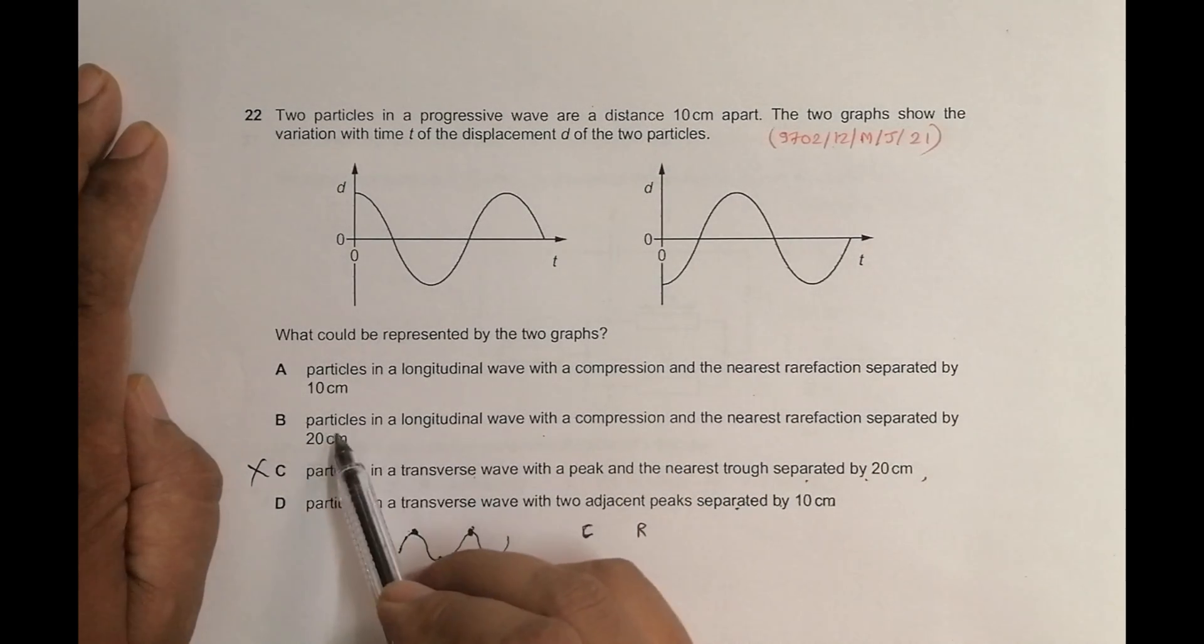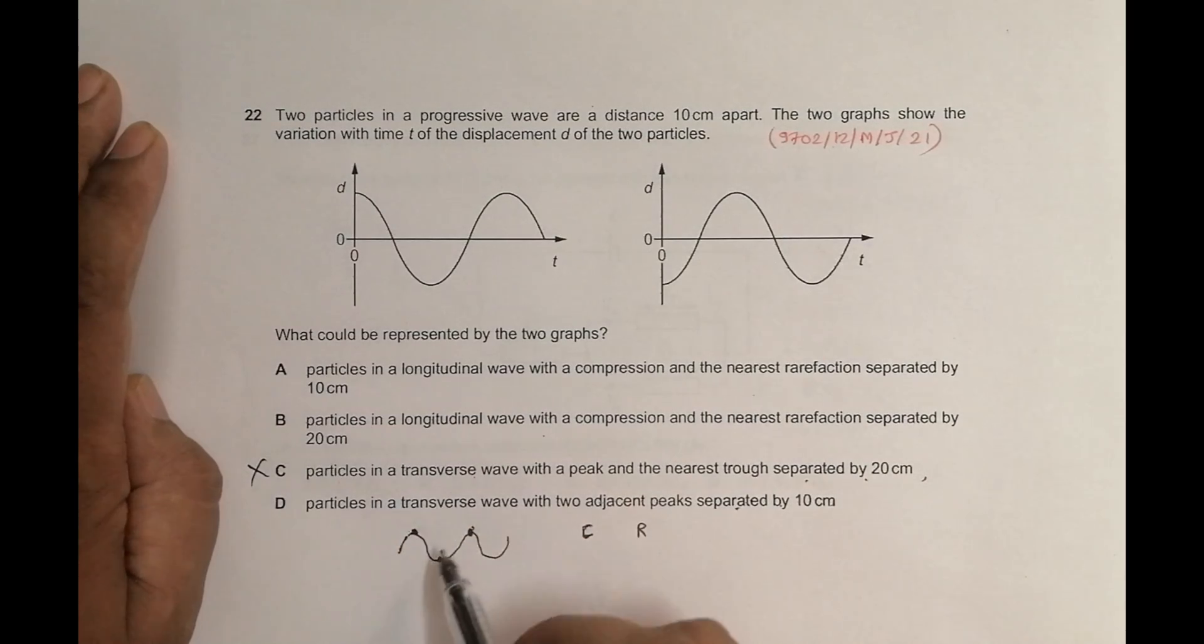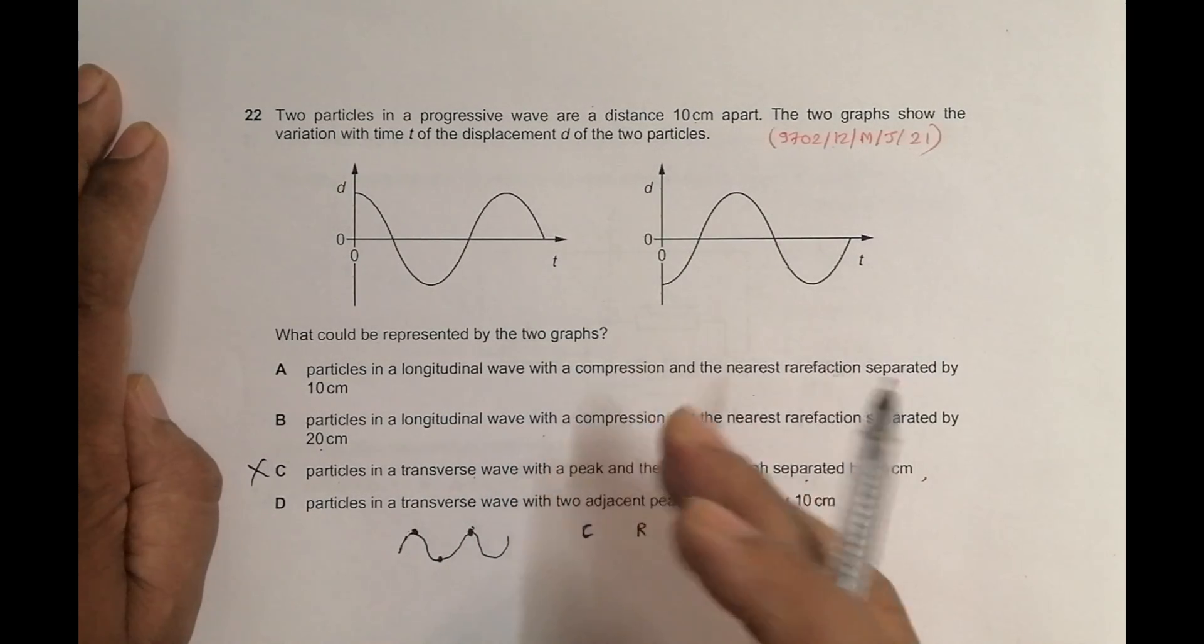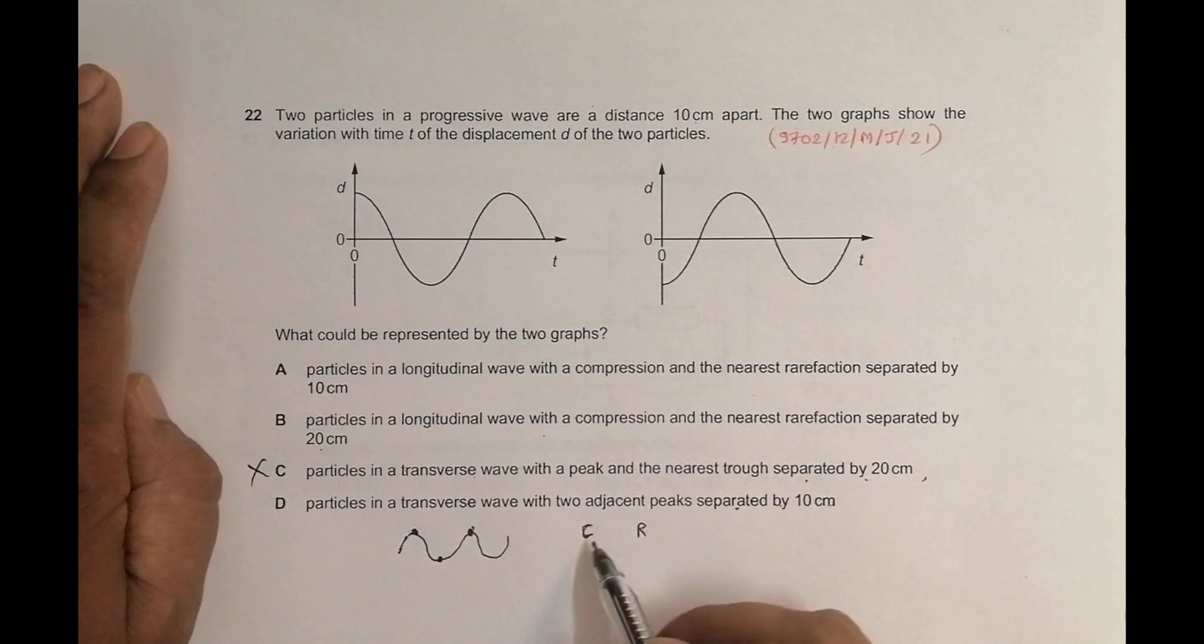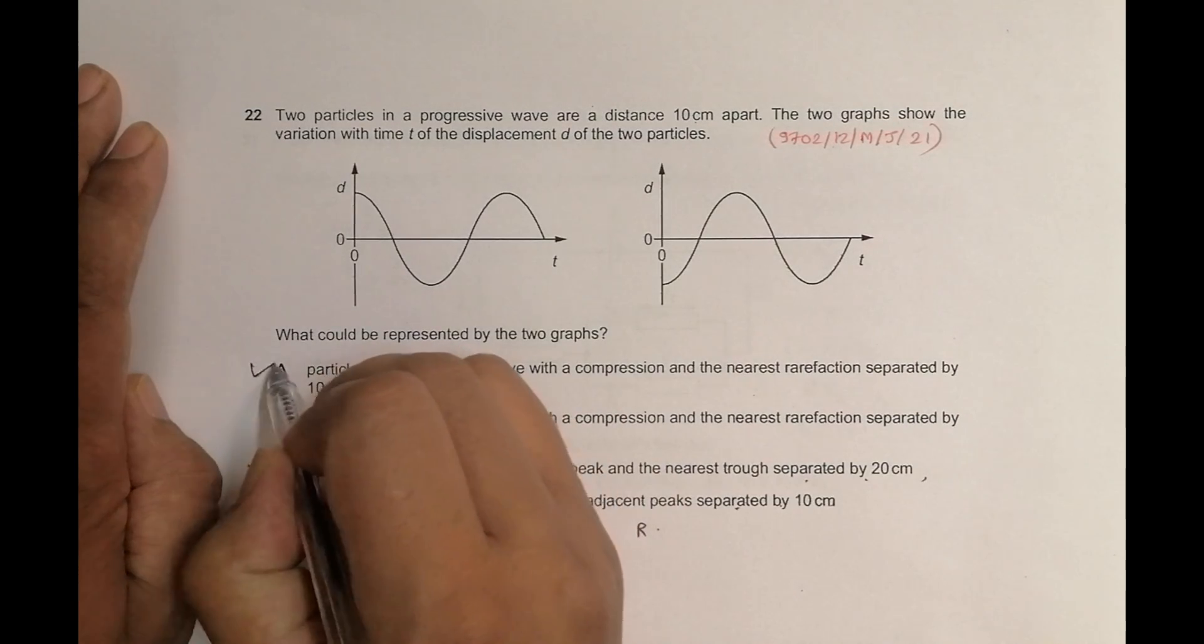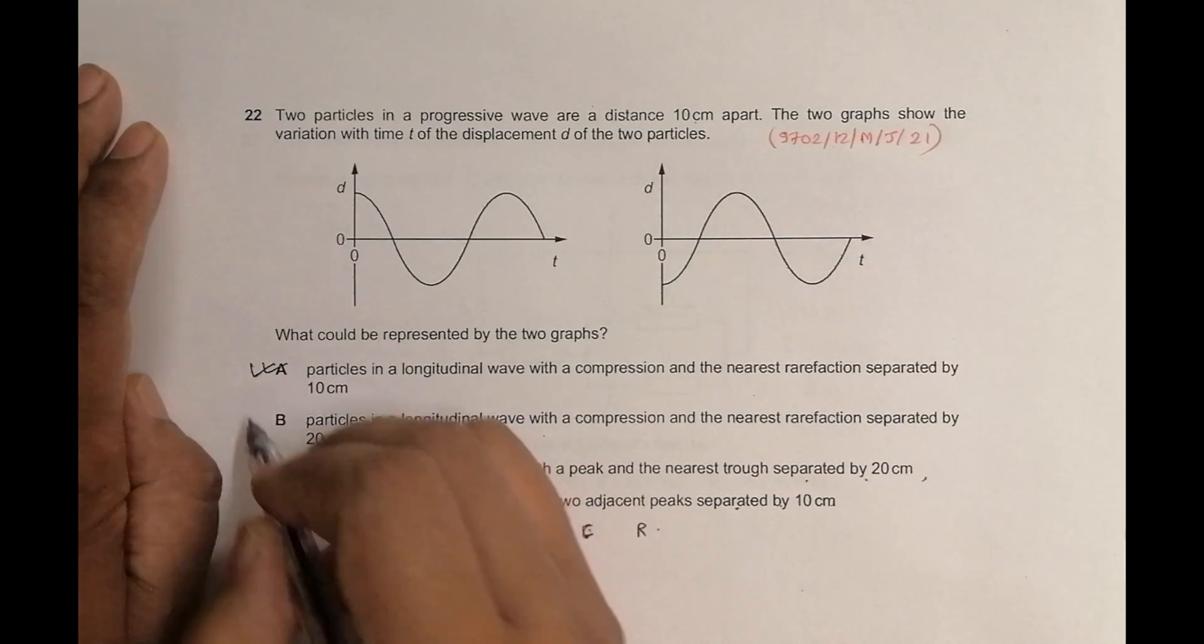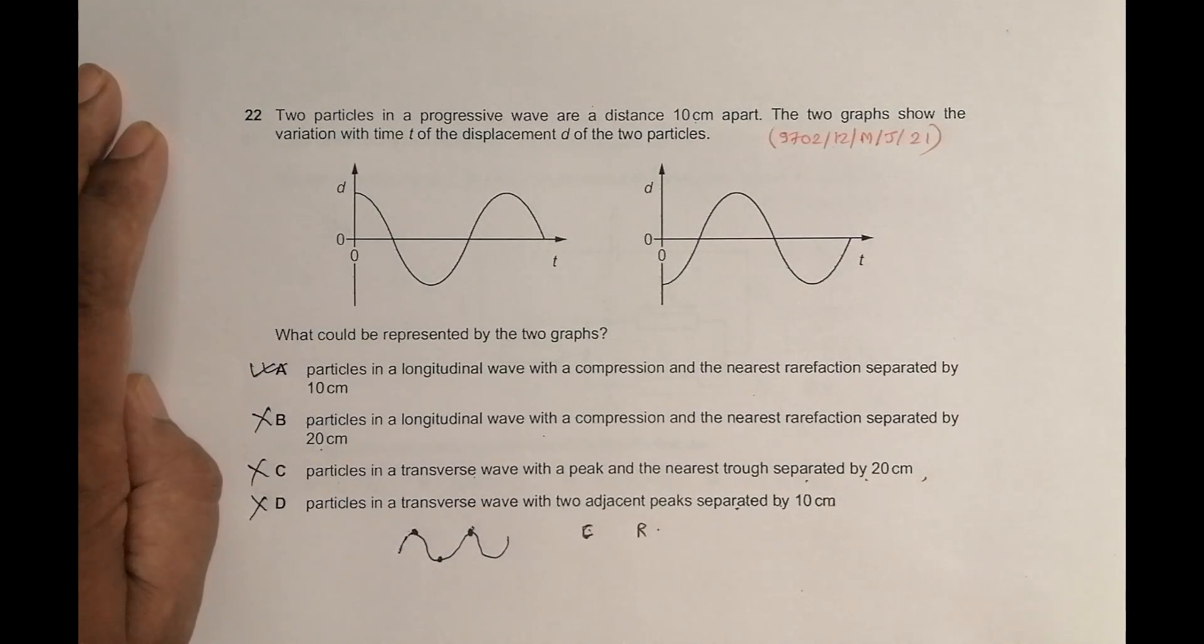Let's see in the second choice, particles in a longitudinal wave with compression and rarefaction, separated by 20 centimeter. It says, okay. But it says 20 centimeter, which is not like this. So these particles should be, these obviously displaced particles with opposite movements should be, the particles at the compression and rarefaction, and which is separated by 10 centimeters. So choice number A is the correct choice, and the choice number B is again incorrect. So it should be the answer here.